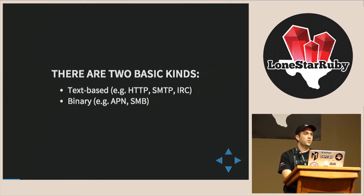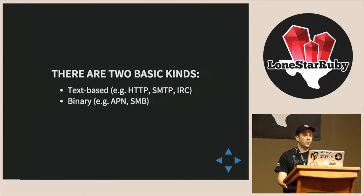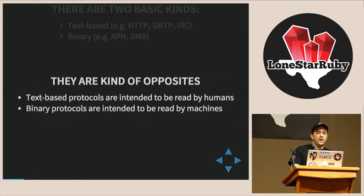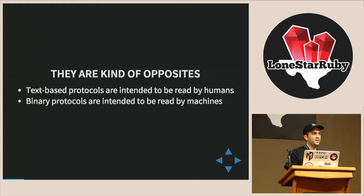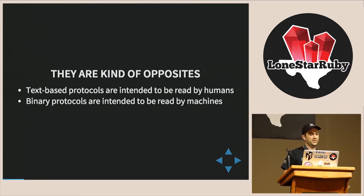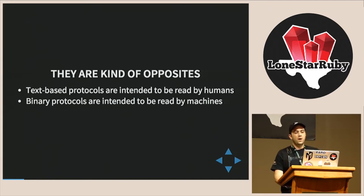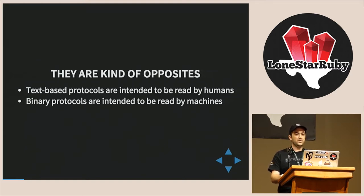There are two basic kinds of protocols: text-based, which we should all be familiar with — HTTP, things like that — and then there's binary. We're going to talk about two of those today: Apple Push Notification and Server Message Block. A text-based protocol is really designed to be read by people. I have colleagues that can just open a Netcat socket and bang out an SMTP interaction from memory. A binary protocol is intended to be read by a machine, created to make communication between two devices as efficient as possible.